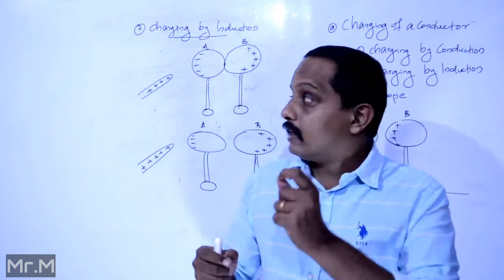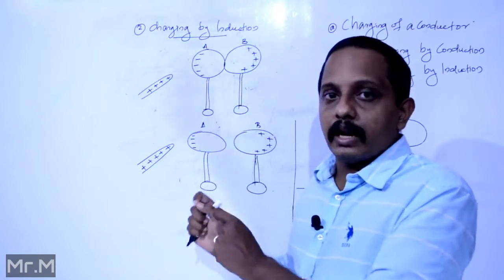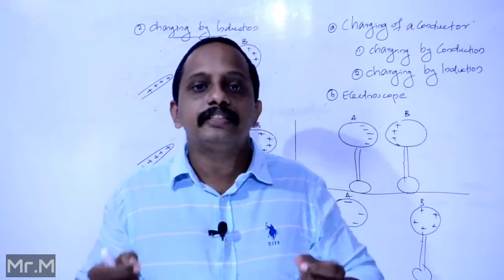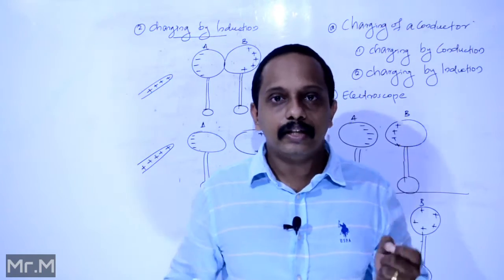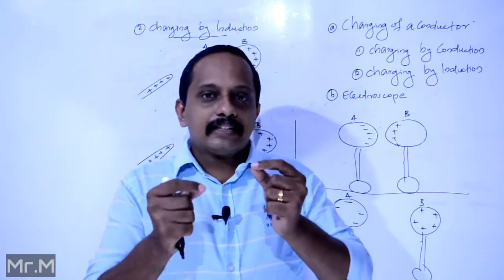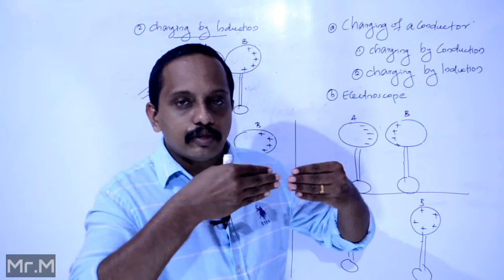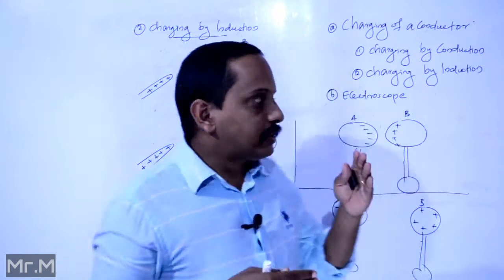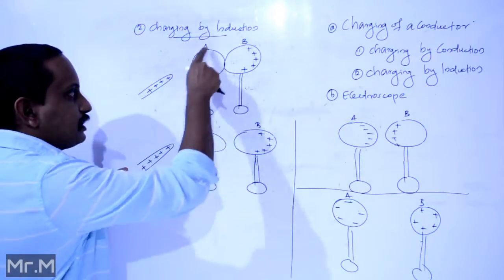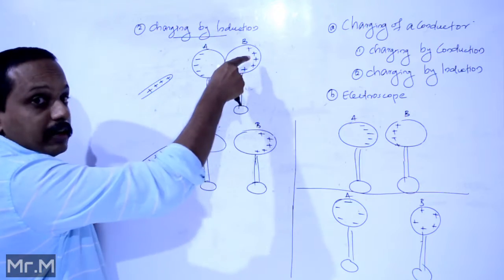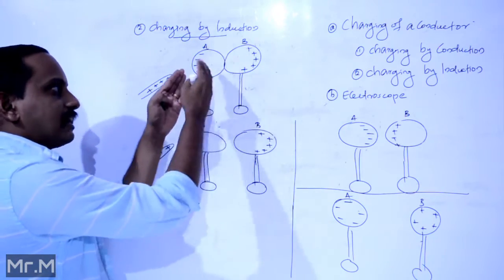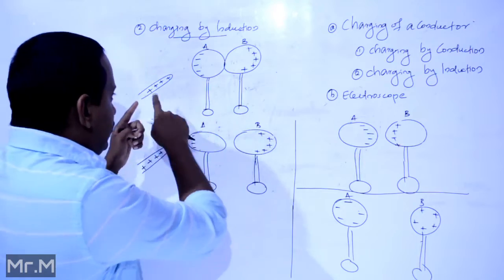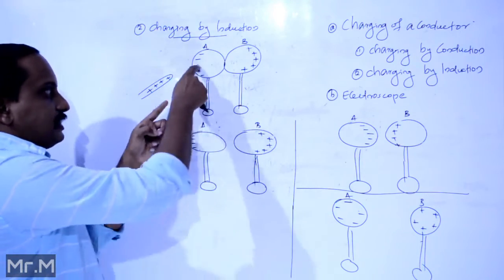This is called charging by induction. The basic difference between charging by conduction and charging by induction is: in charging by conduction, the charged object has to make contact with the uncharged object, whereas in charging by induction, there is no contact — the uncharged object only needs to be brought near.